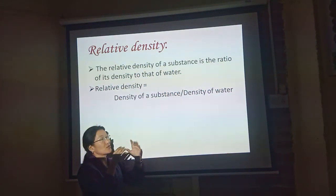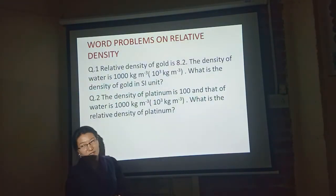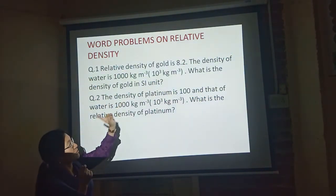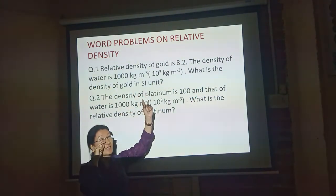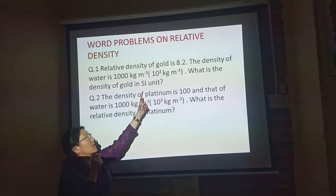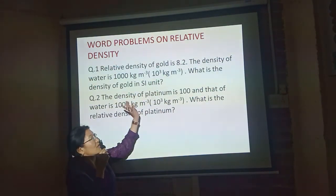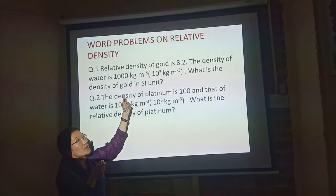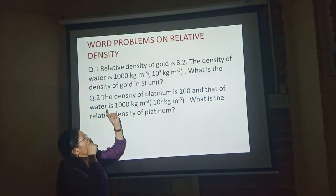Now let's do an exercise. The relative density of a bolt is 8.2. The density of water is 1000 kg per meter cubed. We need to find the density of the substance.